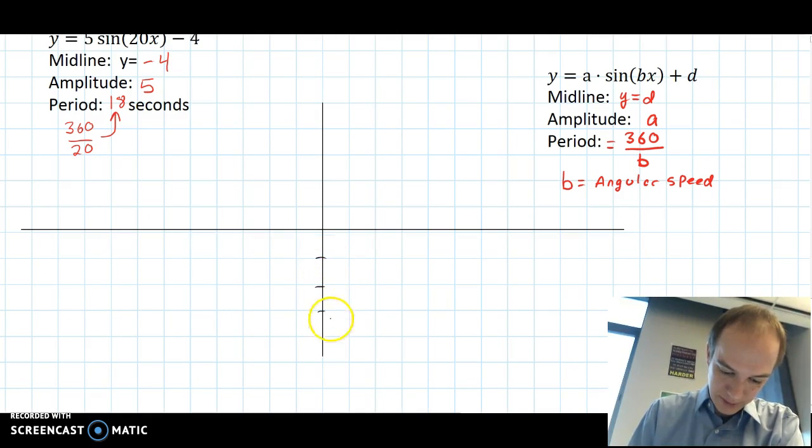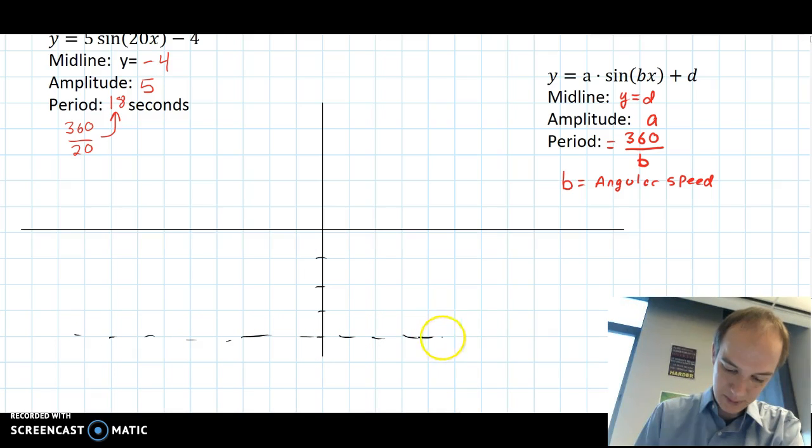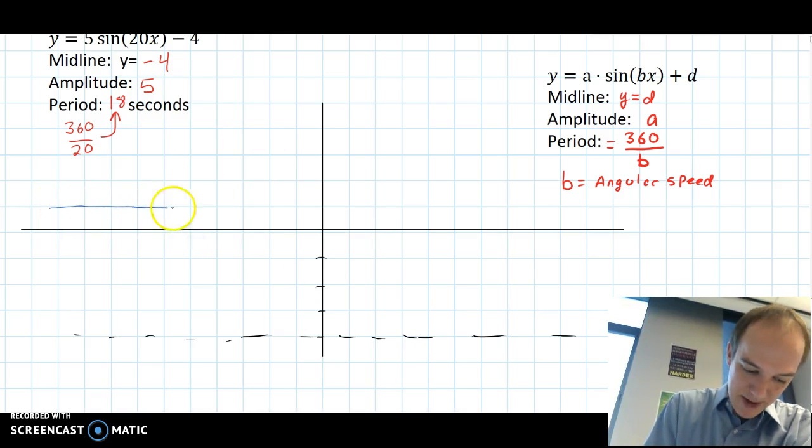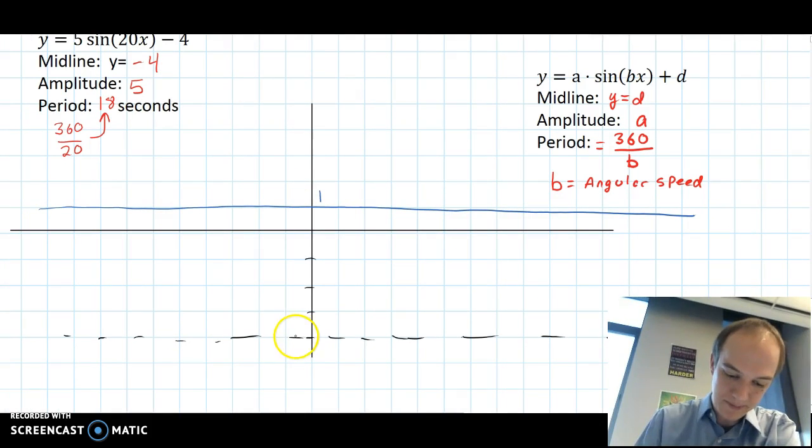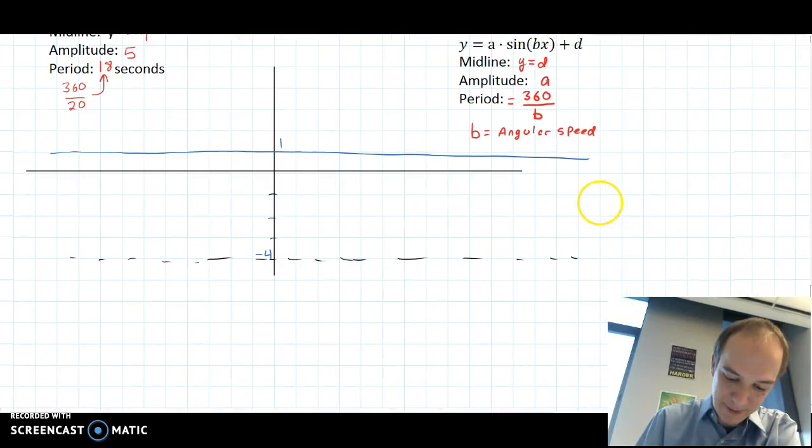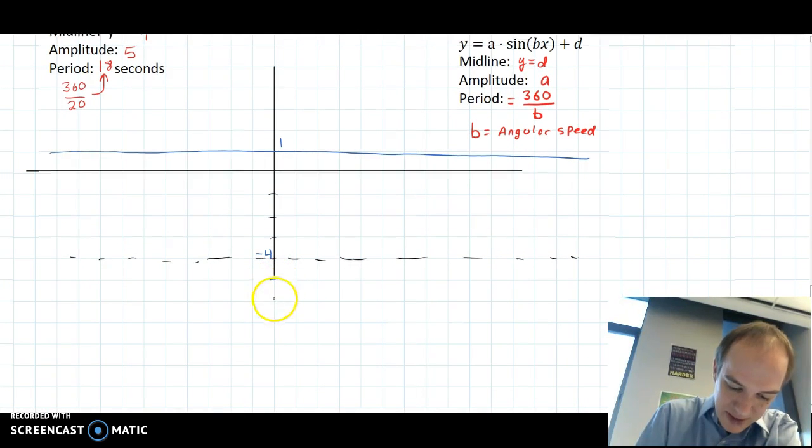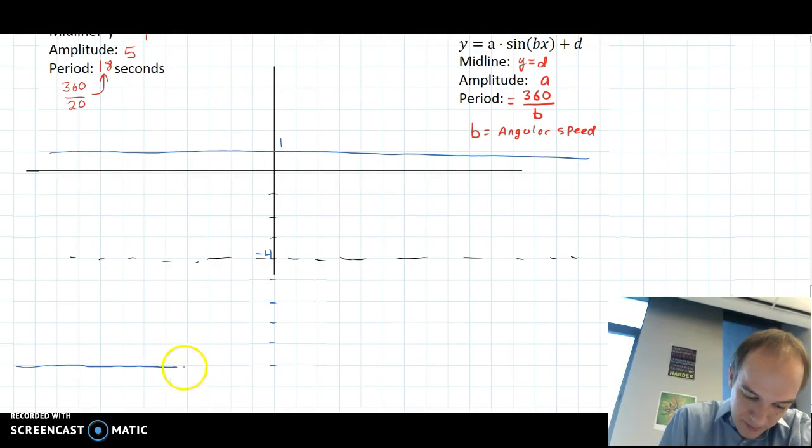I'm going to go ahead and draw the midline at y equals negative 4. 1, 2, 3, 4. I'm going to draw the midline here. Negative 4 plus 5 would be positive 1. So the max value is going to be here and at 1. This is negative 4. And negative 4 minus 5 is going to be at negative 9. So I could go down 1, 2, 3, 4, 5. And draw the minimum value right here.